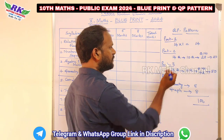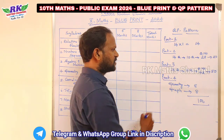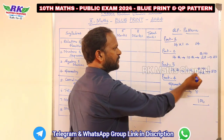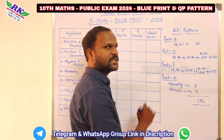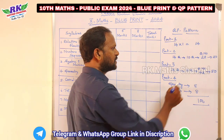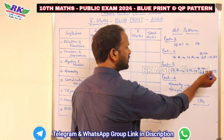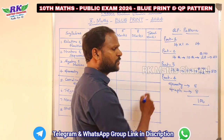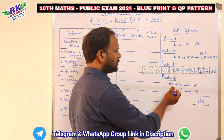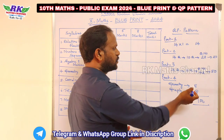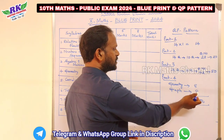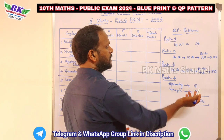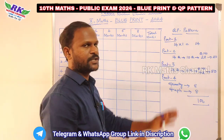Part 3 has 5-mark questions. Part 4 has 8-mark questions — one is geometry and one is graph. Geometry is 8 marks and graph is a total of 16 marks. The overall total is 100 marks.